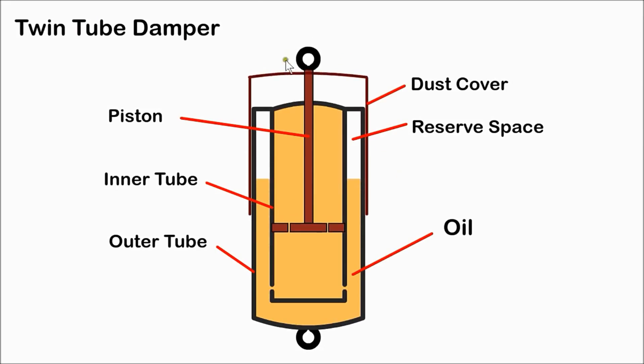A twin tube damper has an inner and outer tube. The piston moves in the inner tube and hydraulic fluid is displaced to the outer tube. The restricted flow through the orifice slows down and controls the movement of the piston. Compressed air or nitrogen allows for the additional volume taken by the piston rod as it enters the cylinder.